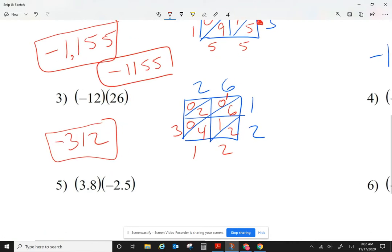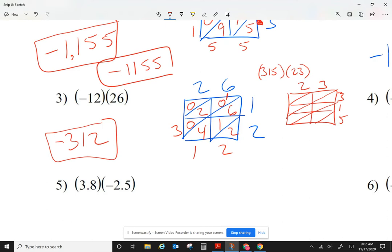Some of your cases, you might have 3 digits. As an example, let's say I had 315 times 23. In that case, I will do a 3 by 2 box. There's my 23. And there's my 315. And then you will do it the way we've been doing it. And you'll be okay.